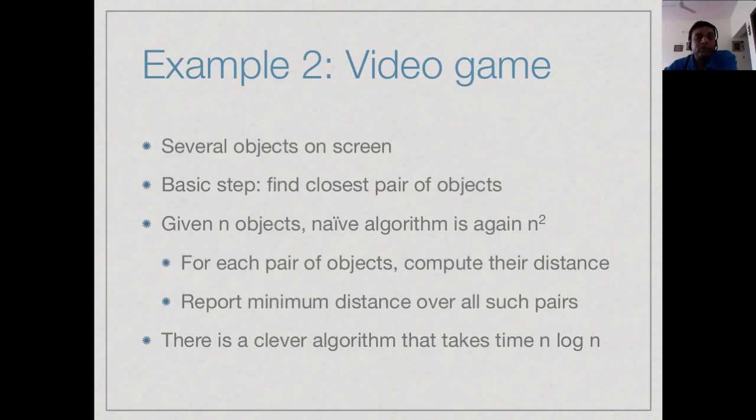Let's look at another example. Supposing we are playing a video game, one of these action type games where there are objects moving around the screen. We have to identify certain objects, shoot them down, capture them. Let's assume that as part of the game, in order to compute the score, it has to periodically find out the closest pair of objects on the screen. How do you find the closest pair of objects? Well, you can take every pair of them, find the distance between each pair and then take the smallest one. This will be an n square algorithm. It turns out that there is a clever algorithm again which takes time n log n.